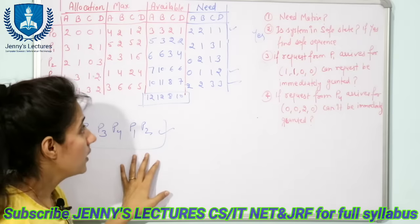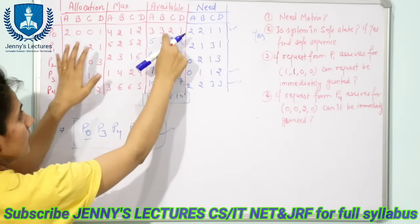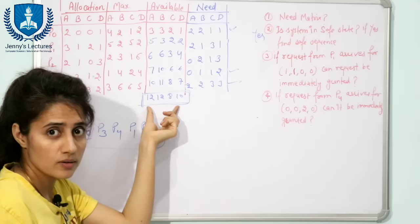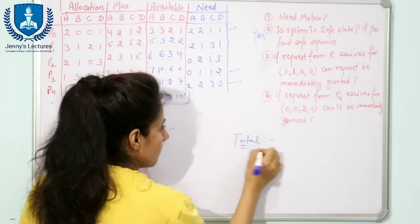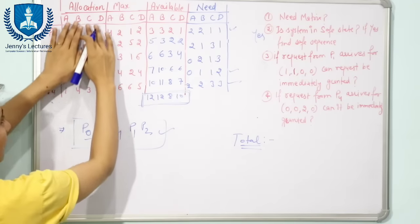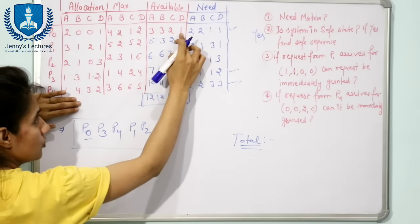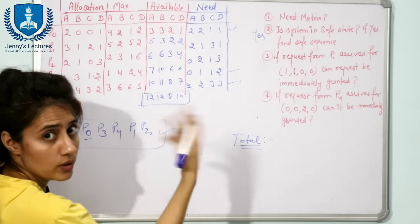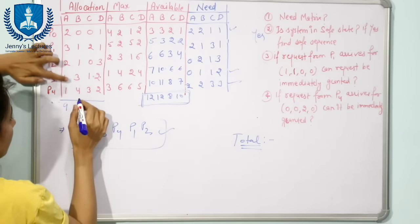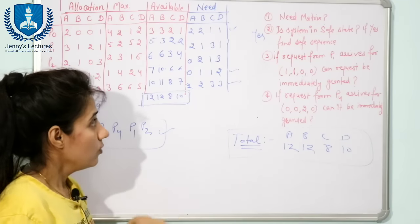You can verify your answer: the initial available resources plus all allocated resources should equal the total number of resources in the system. After executing all processes, you get the total resources. Adding allocation resources plus initial available: 2+3=5, 7, 9 — this matches, confirming the answer is correct.